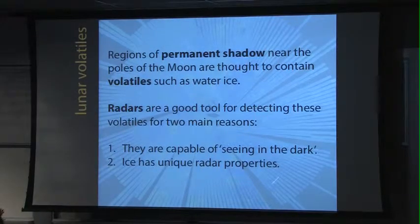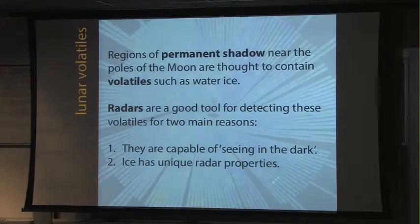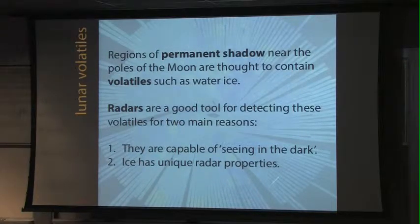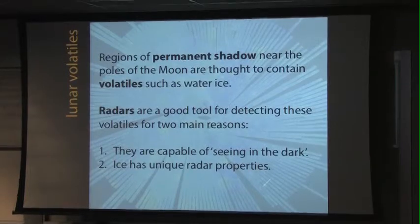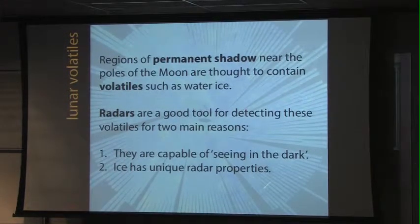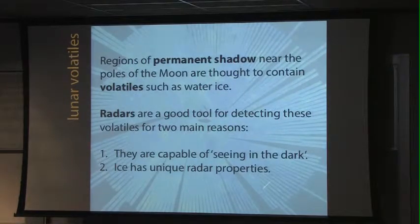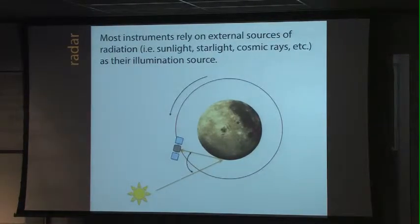The two main points I want you to take away from this talk — and this is why radar is such a great instrument for detecting lunar volatiles — are: first, radars are active instruments, so unlike a lot of other instruments you bring your own power source, making them capable of seeing in the dark. As we know, these ice deposits tend to live in permanently shadowed regions. Second, ice has some really interesting radar properties that make it stand out, as we've seen from the talks earlier today on Mercury.